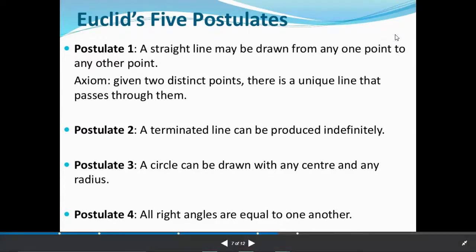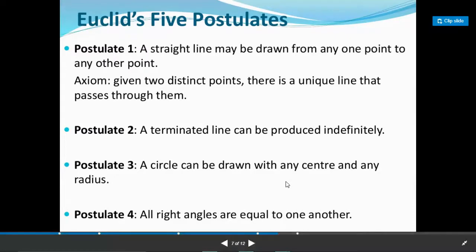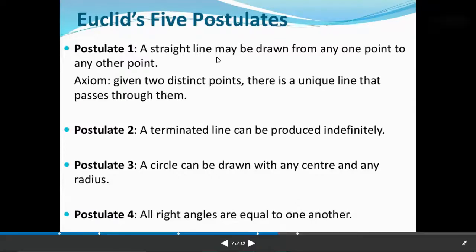A circle can be drawn with any center and any radius. You all know that if a radius of five centimeters is given, you can draw a circle. If the radius is four centimeters, three, five, seven, or eight, you can draw the circle. But the condition is that radius and center must be given. Because if the center is given, you can draw any circle of any radius. So, a circle can be drawn with any center and any radius.